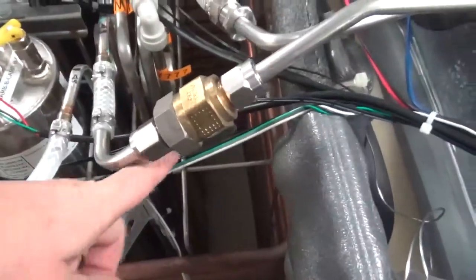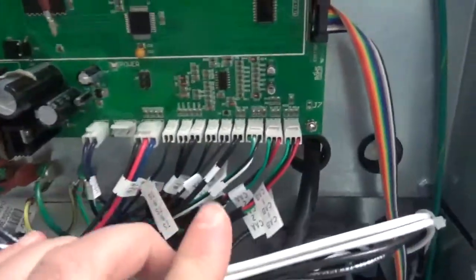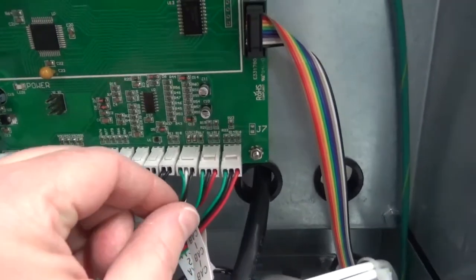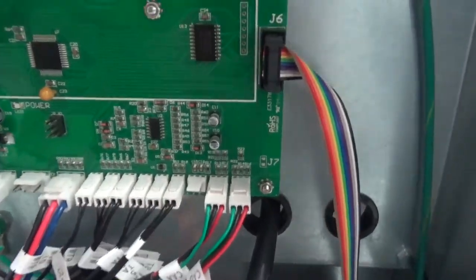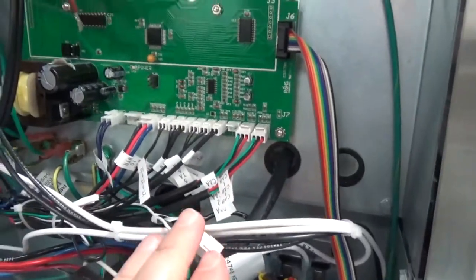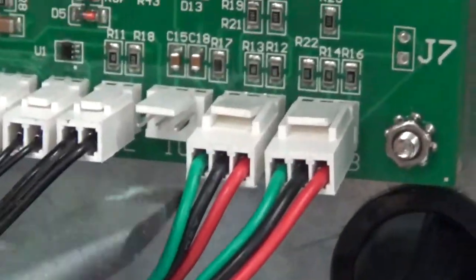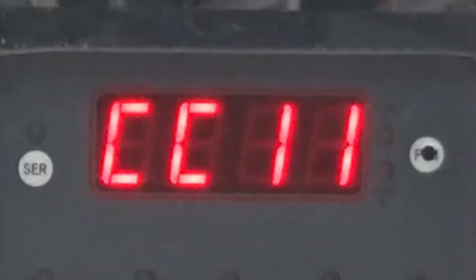If we still don't see CC11 on the display, remove the wire harness from the control board and jump all three pins on the control board. CC11 should appear. That tells us that the board is good and the ice bank control probe is bad.